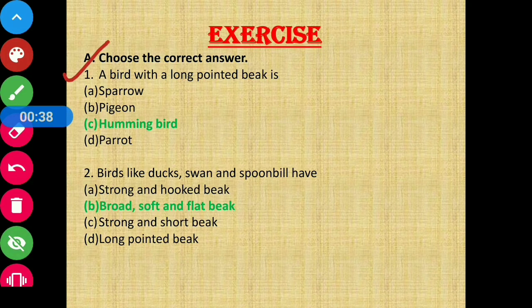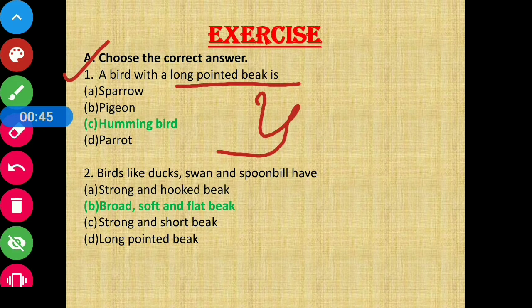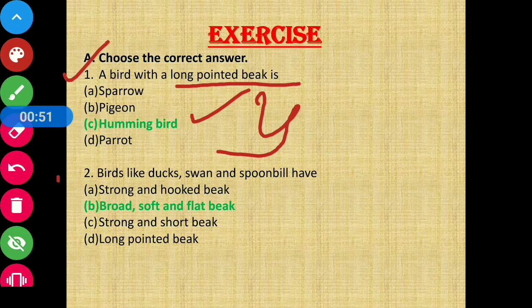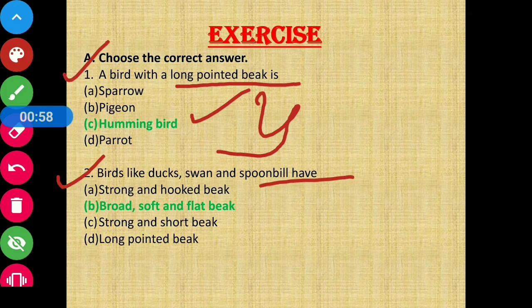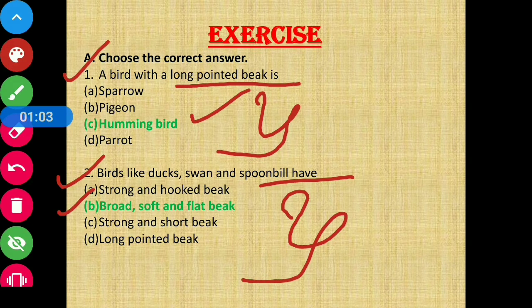Section A, Question 1: A bird with a long pointed beak — the answer is hummingbird. Question 2: Birds like ducks, swan, and spoonbill have what kind of beak? They have a broad, soft, and flat beak.